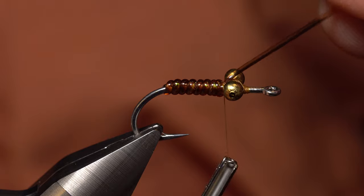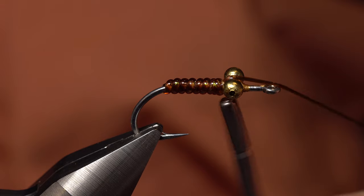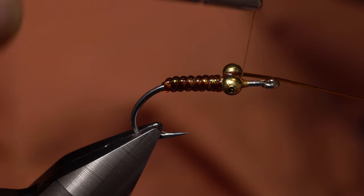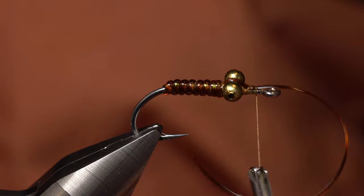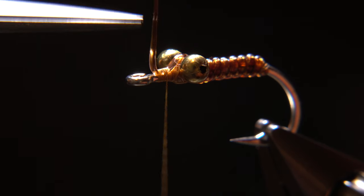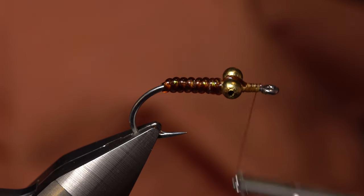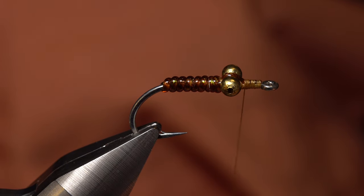After securing the D-rib with wraps of tying thread behind the eyes, pull it forward over top of the thread wraps that secure the bead chain. Then bring your thread under the hook shank and start taking thread wraps to bind the D-rib to the top of the hook, almost up to the eye. You can then reach in with your tying scissors and snip the excess D-rib off close. Continue taking thread wraps to further bind the material down and create a smooth tie-in area for the wing of the fly.